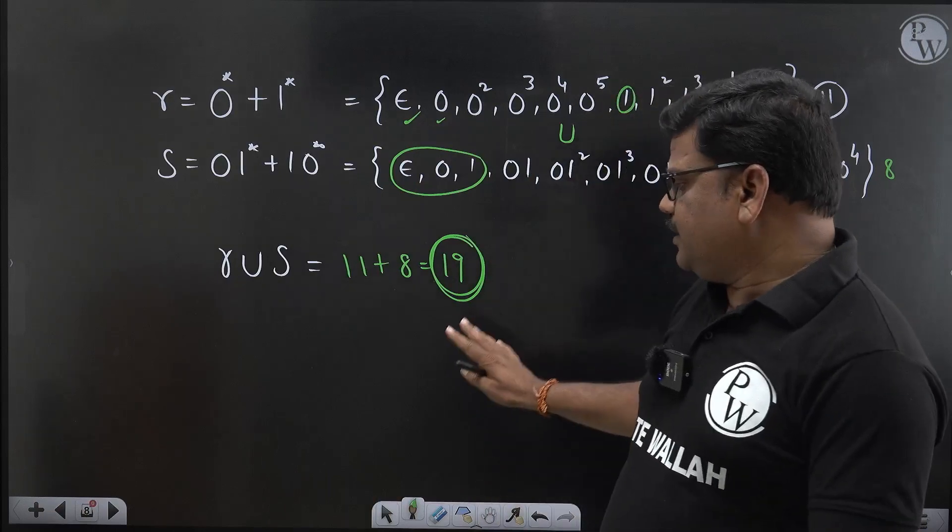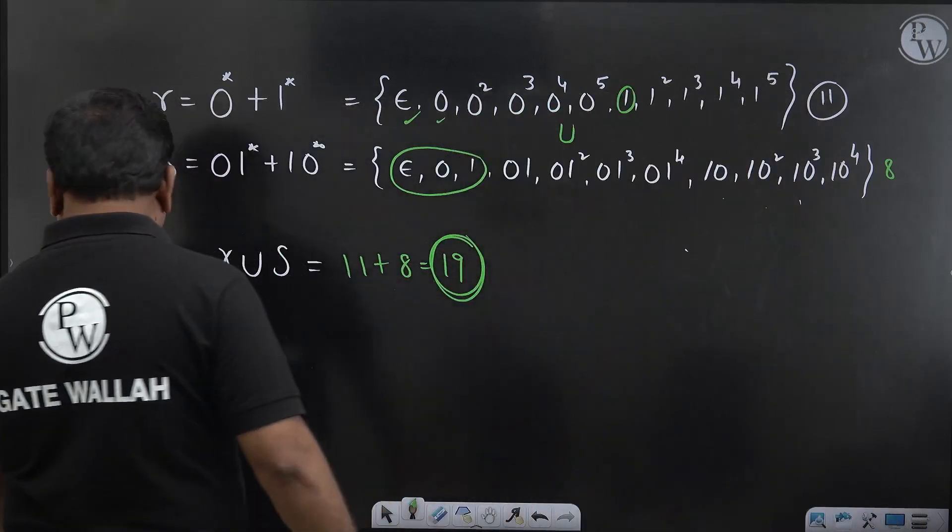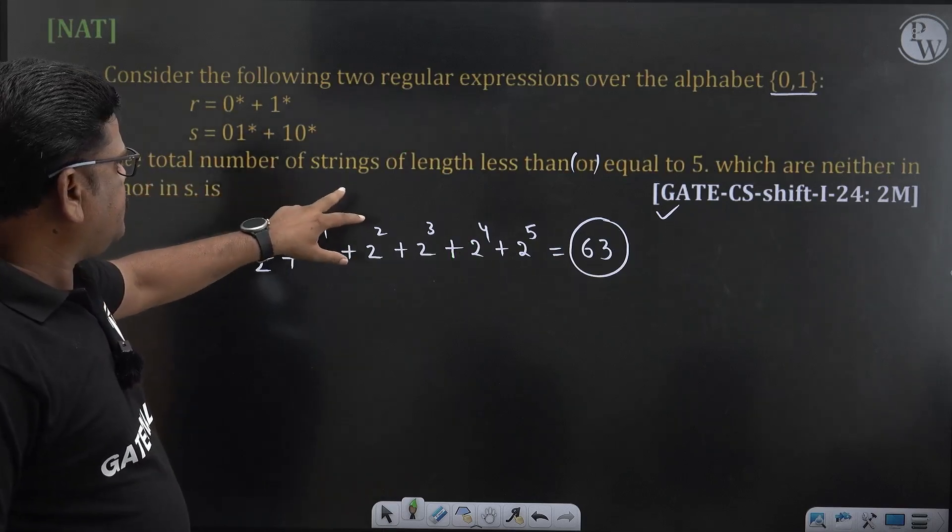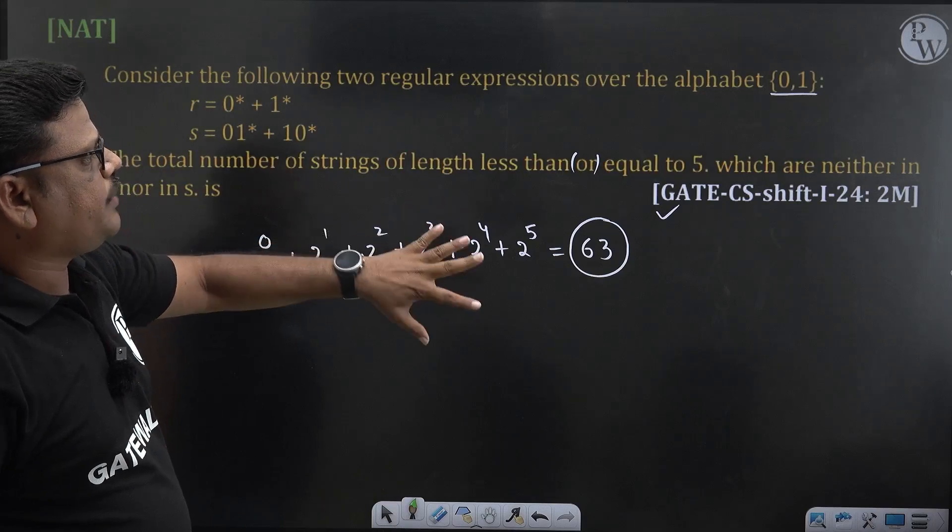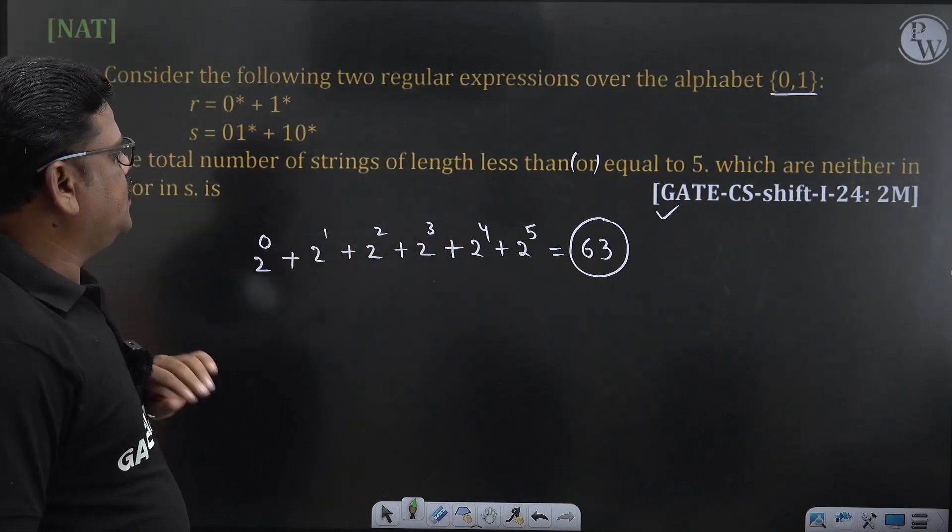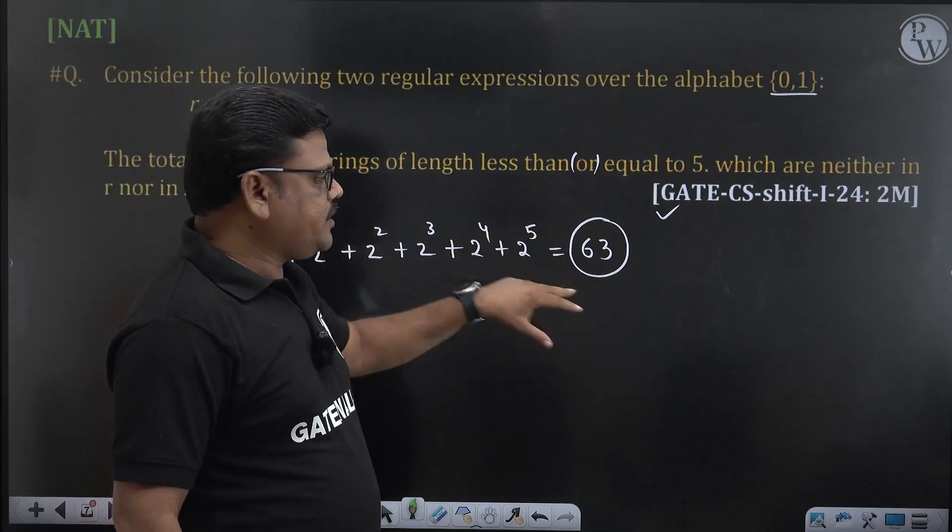Remember this value, based on this if you solve our question. The total number of strings of length less than or equal to 5 which are neither in R nor in S. The total number of strings value is actually 63.